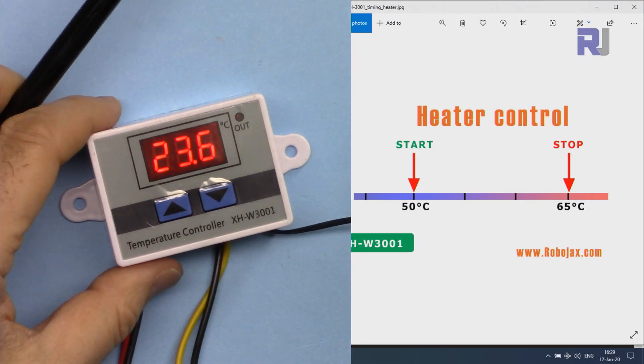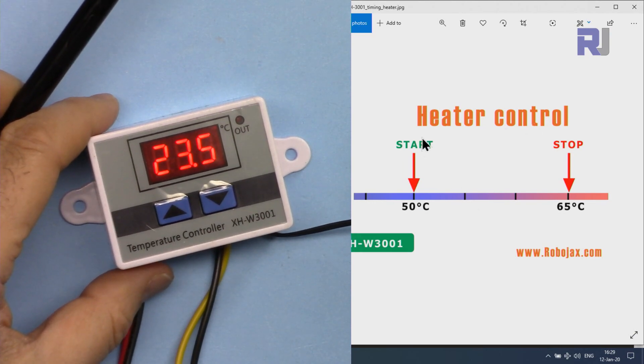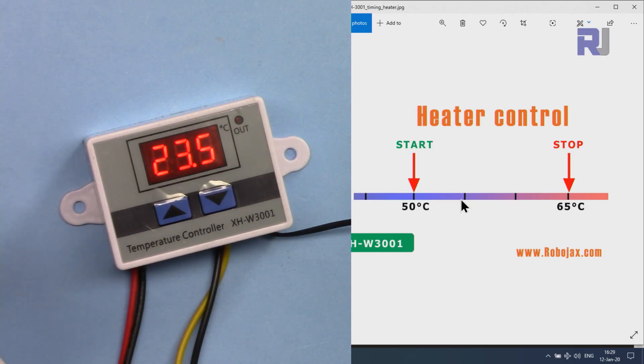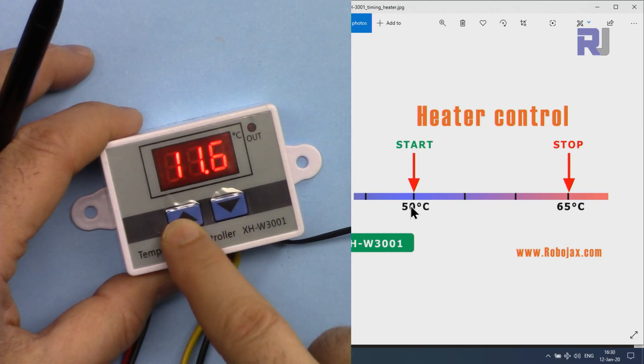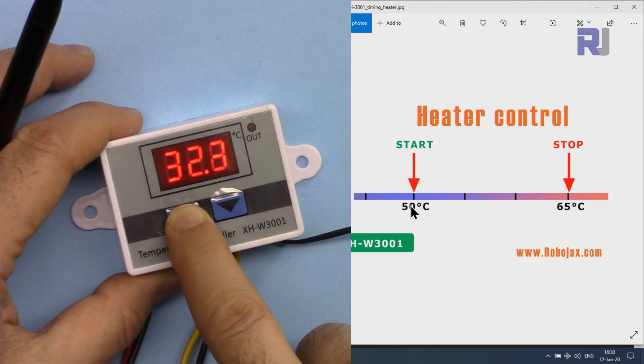We have a start temperature of 50 degrees and stop temperature of 65 degrees. And how it works is that because this is a heater, we are keeping the heat. Meaning if the temperature goes below 50 it will start and will heat up, and we don't want above 65 or whatever temperature you want - so that's our stop temperature. Now let me set the start for 50. So if I press this, that's the start, and then hold it again.